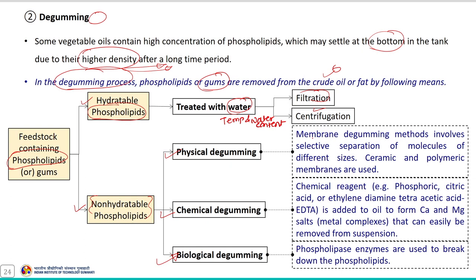Non-hydratable phospholipids can be separated from oils and fats by chemical degumming, physical degumming or biological degumming. Physical degumming involves membrane separation by selective separation of molecules of different sizes, using ceramic or polymer membranes. In chemical degumming, chemical reagents such as phosphoric acid, citric acid or EDTA are added to the oil to form calcium and magnesium salts which can then be easily removed. Biological degumming involves phospholipase enzymes which break down the phospholipids present in the oils or fats.